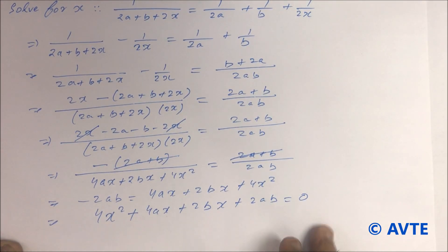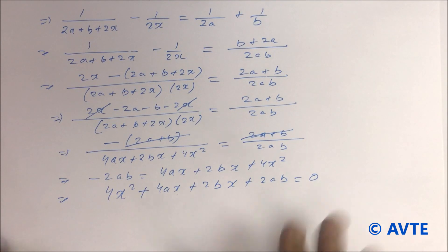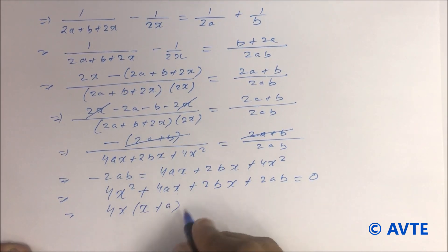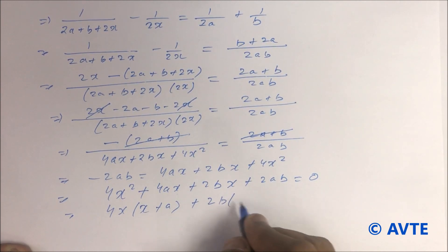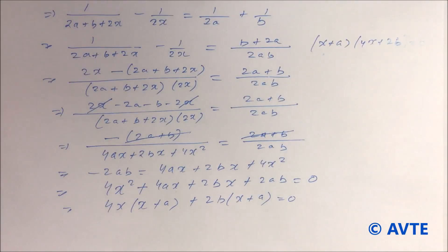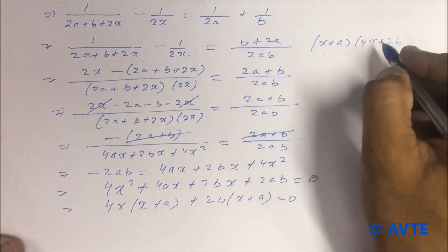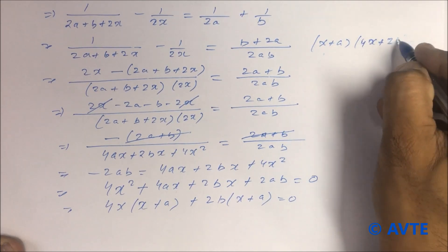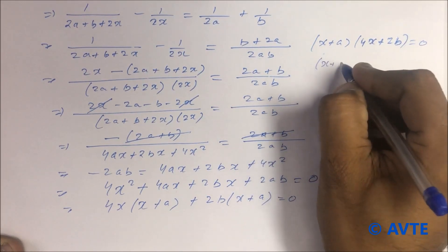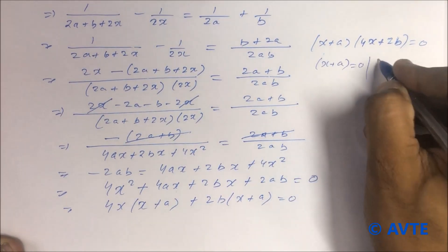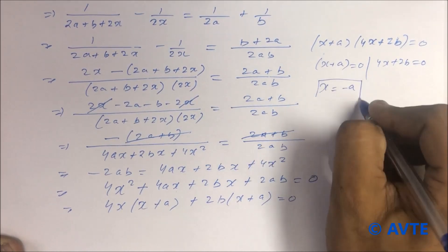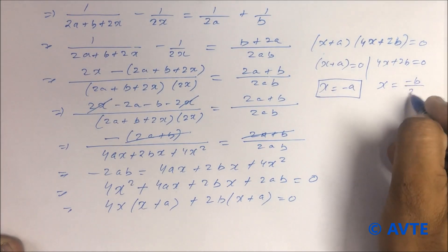Now you can solve by middle term splitting. We have 4x squared, and grouping gives 4x squared plus 2bx plus a, yielding two factors. So x plus a into 4x plus 2b equals 0. Since the product of two things is zero, either x plus a equals 0, giving x equals minus a, or 4x plus 2b equals 0, giving x equals minus b by 2.